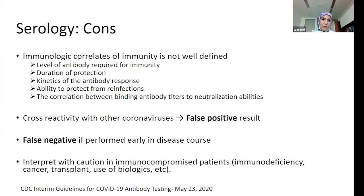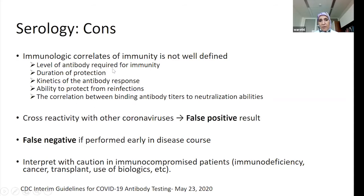Initial indicators seen in China and elsewhere suggest these antibodies may provide protection. There were experiments done on primates where infected animals developed antibodies and were then re-challenged — they did not get re-infected. We are using convalescent plasma antibodies to try to help patients, but there are still not enough studies to confirm immunity from developing these antibodies. We also don't know what level of antibody is required, how long it lasts, or the full kinetics of the antibody response.